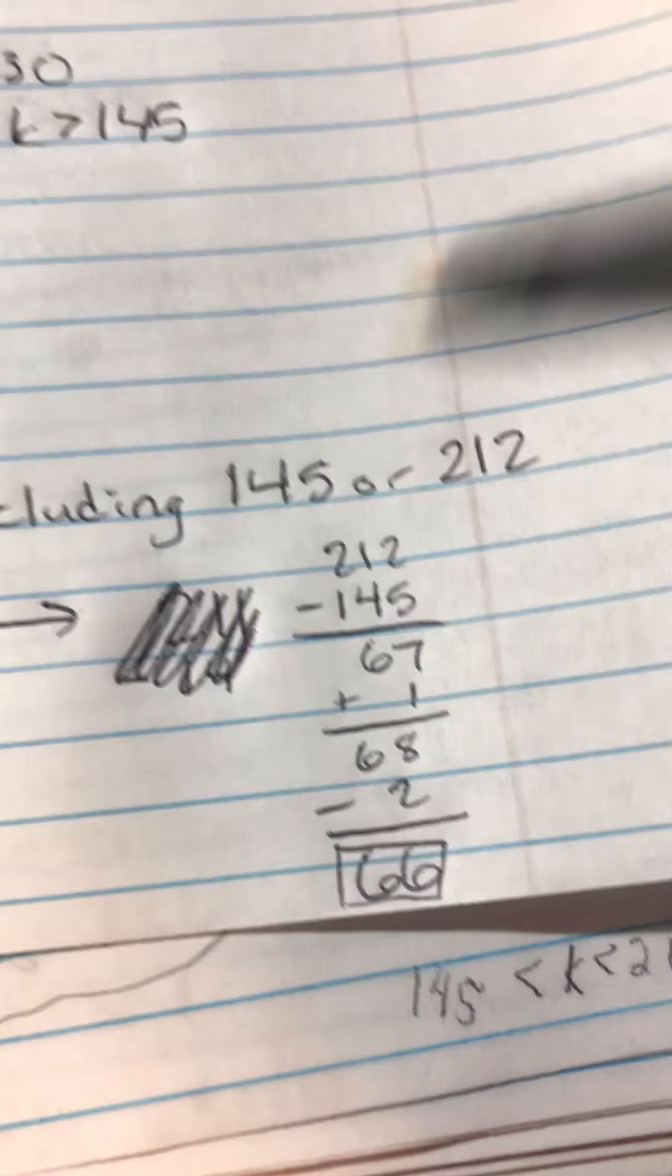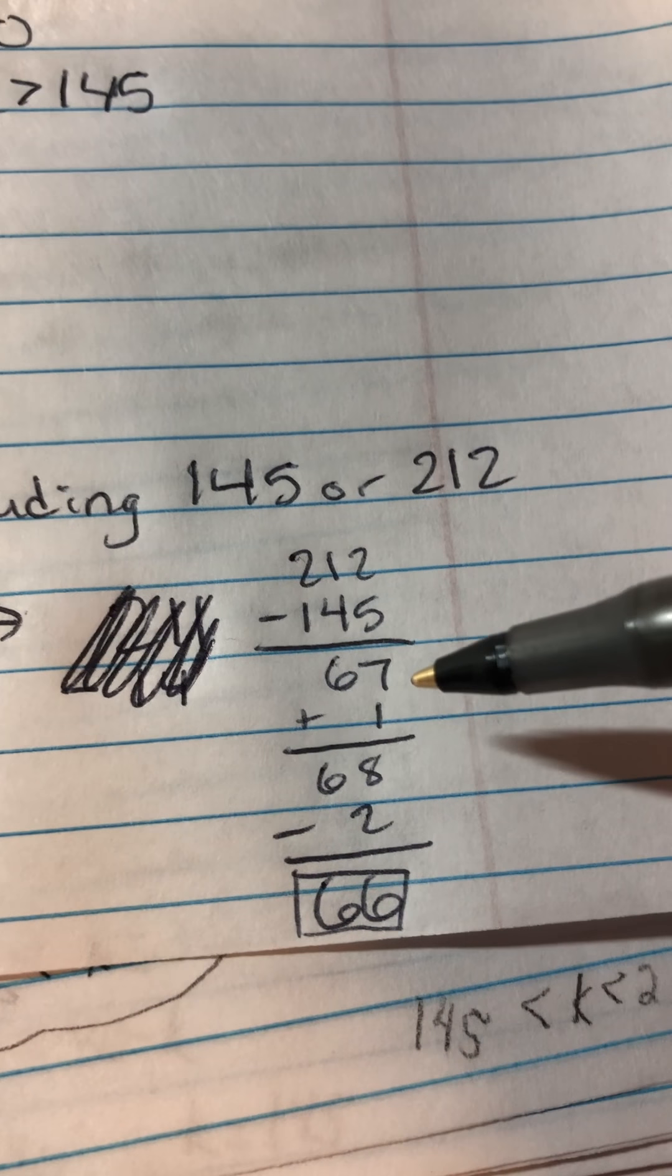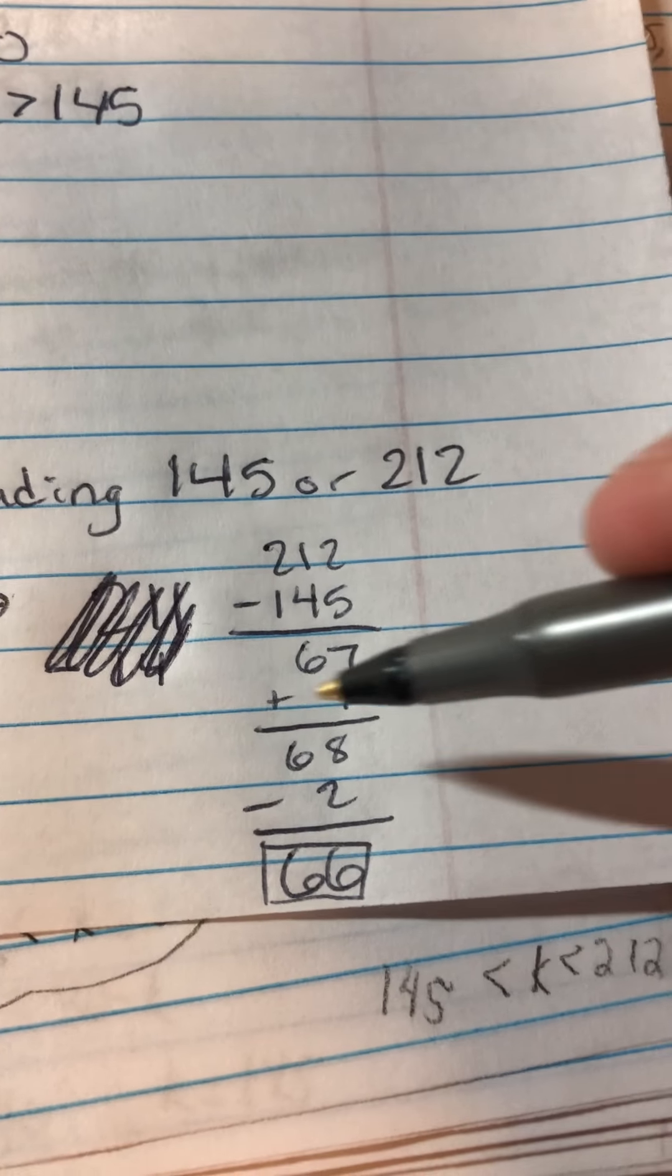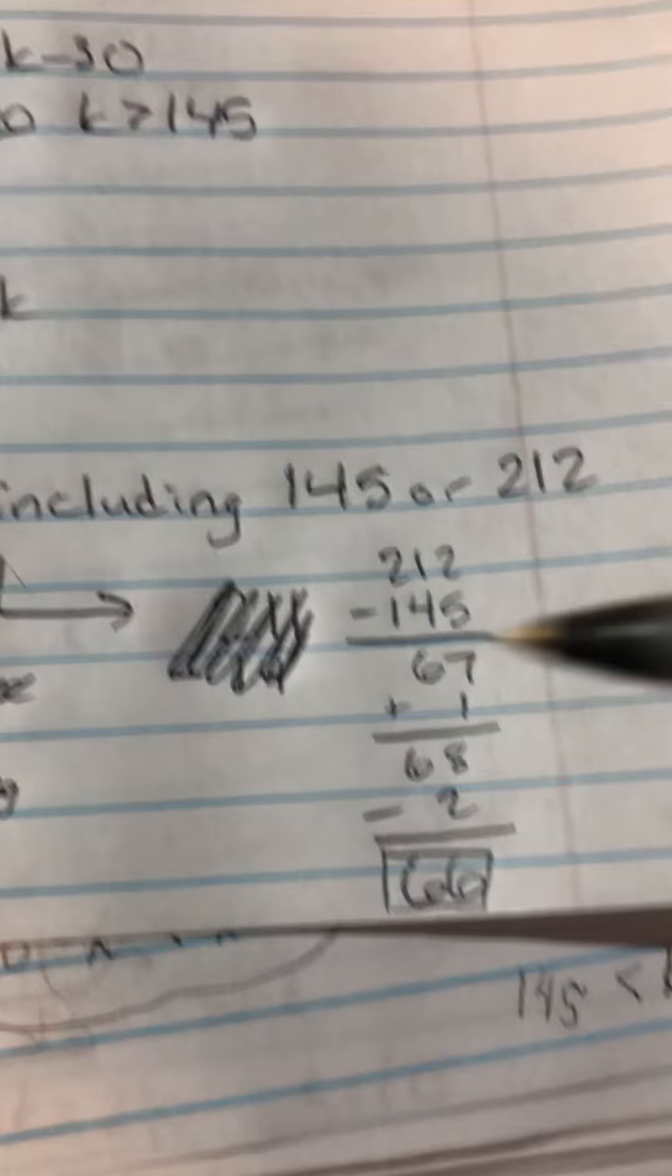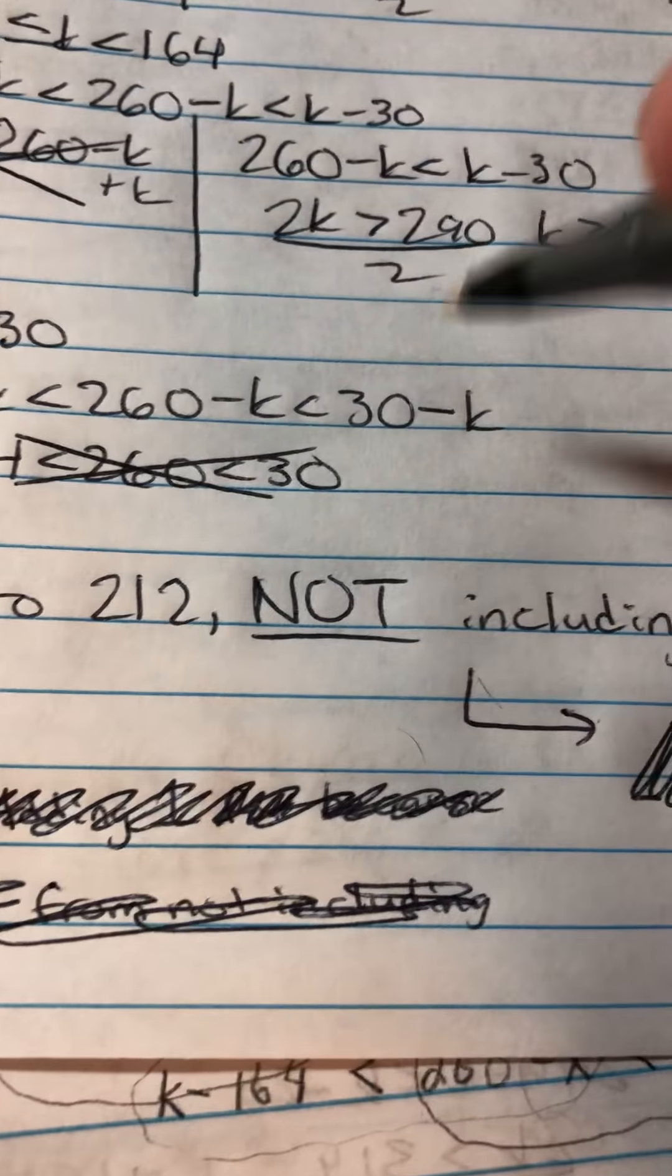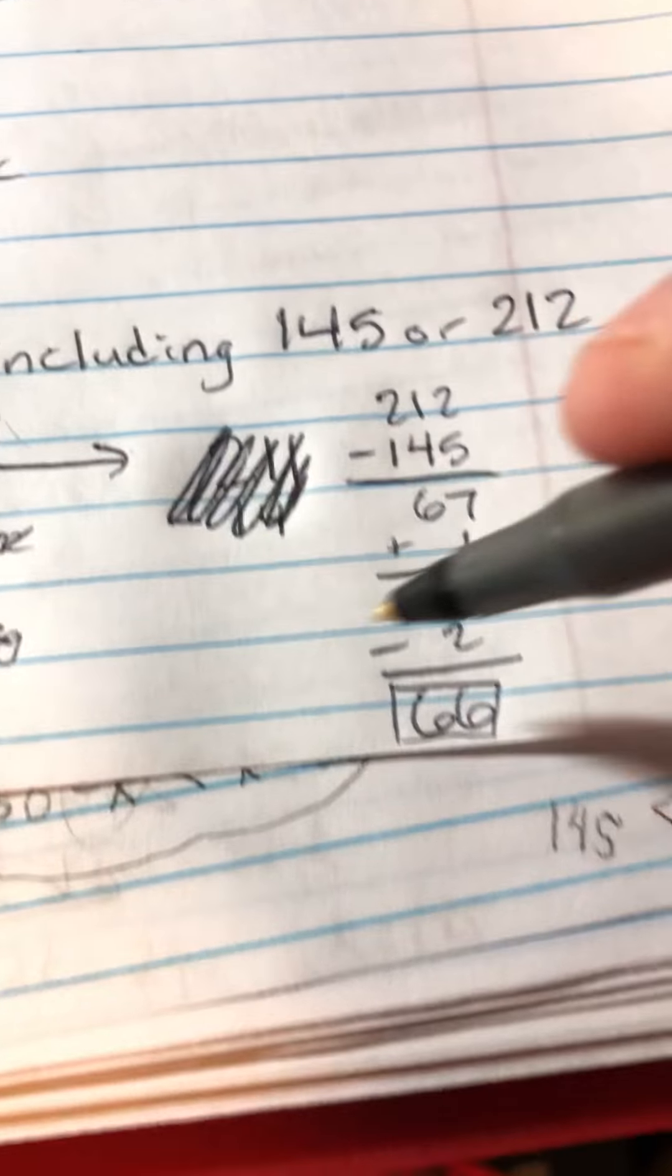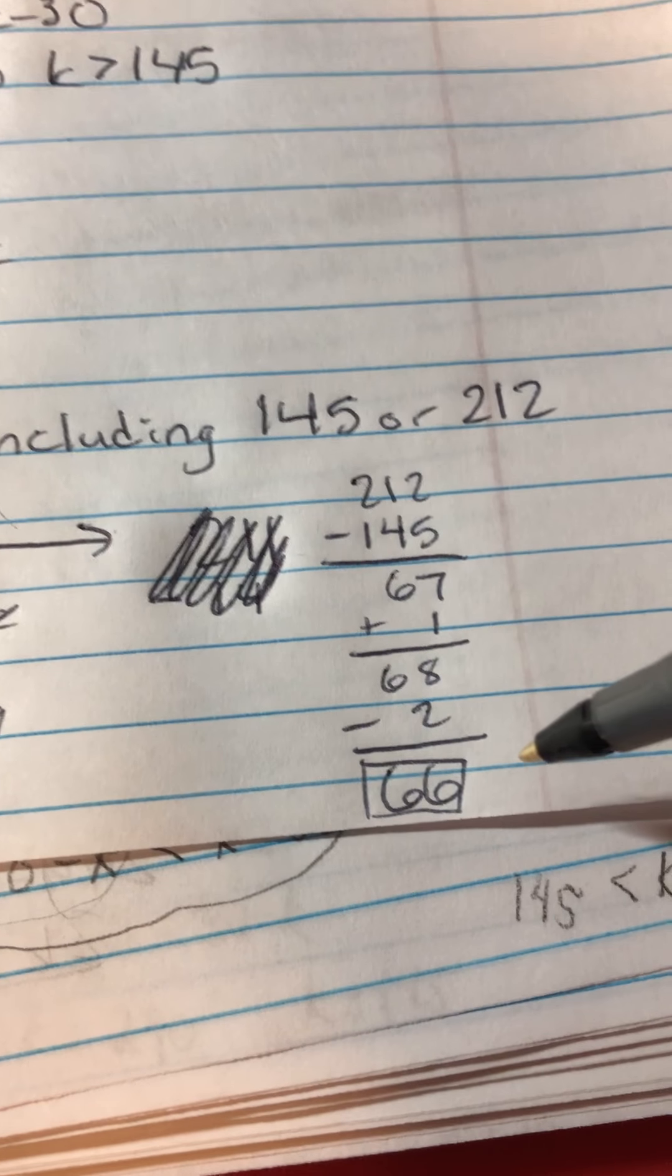So I would end up doing 212 minus 145, I get 67. And I add 1 because we're counting integers, and we'd be forgetting an integer if we didn't add the 1. So that would be 68. And so 68 minus 2, since remember, we are not including 145 or 212. So we'd end up getting 66. And 66 is the final answer.